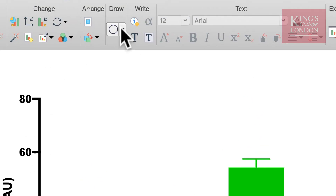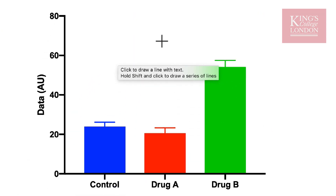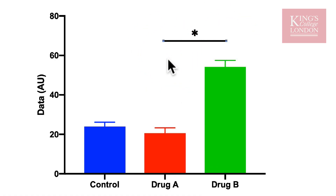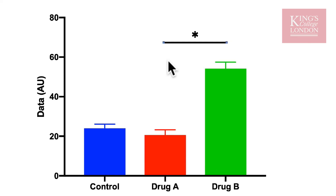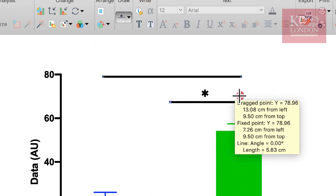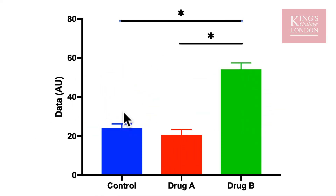Now that we have determined which groups are statistically different from which groups, we can annotate our graph accordingly. Using the drawing palette in Prism 8 we can select lines with text and draw a horizontal line between drug A and drug B, and using a star in the drop-down menu we can indicate that drug A is significantly different from drug B. We can repeat this between control and drug B to indicate the level of significance. So now we have carried out a one-way ANOVA between three data sets and annotated a graph with the results of our statistical test.